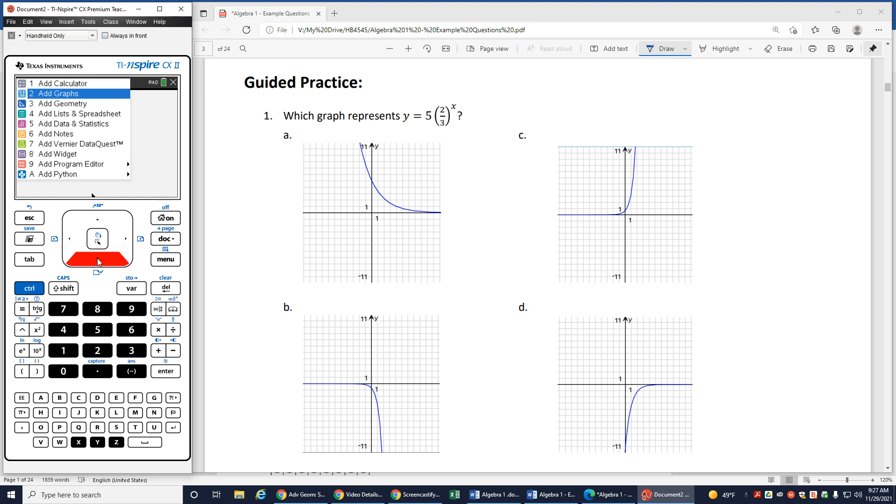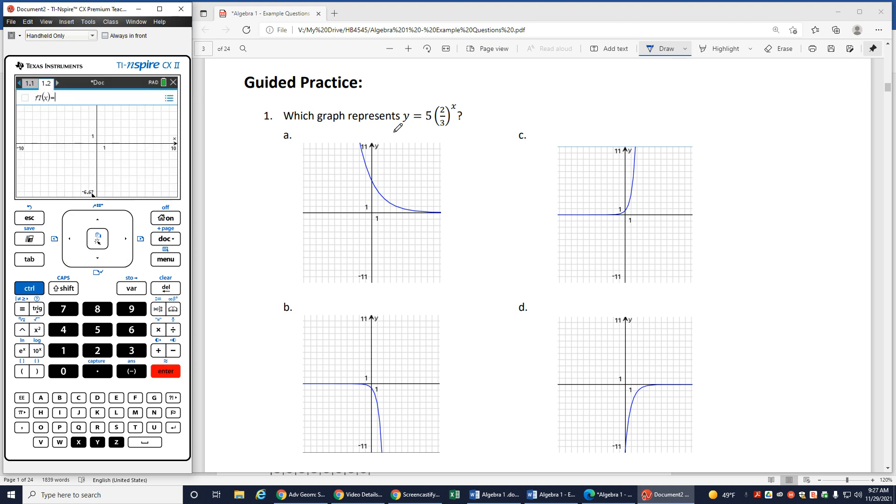And I can type in 5 parentheses 2 over 3 close parentheses raised to the x power. So to get that x power, we're used to hitting this x squared button to get the square up there. But to get an x up there, right next to that x squared there's this little up arrow. When you click on that, notice it puts a little empty box up there and you can hit x.